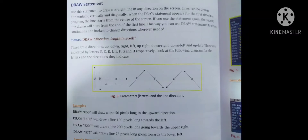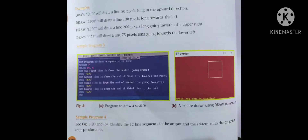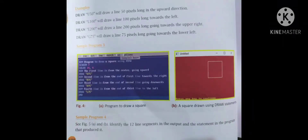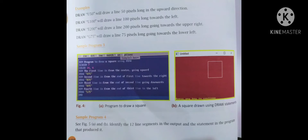Sample program to draw a square using the DRAW statement: SCREEN 12, COLOR 14, 4. The first line goes upward from center: DRAW U75. The second line goes right: DRAW R75. The third line goes down: DRAW D75. The fourth line goes left: DRAW L75. The output shows a square with a red background and white foreground.